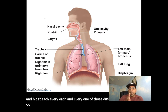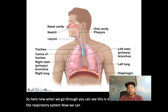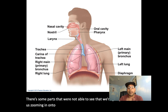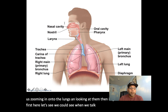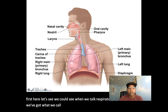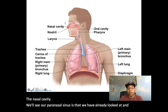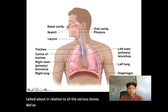Here you can see what makes up the respiratory system. The majority of it is visible, but some parts we're not able to see — we'll zoom in on the lungs to look at them in greater detail. First we've got the nose and the nasal cavity. We'll also see our paranasal sinuses, which we've already looked at in relation to all the various bones around the nasal cavity.